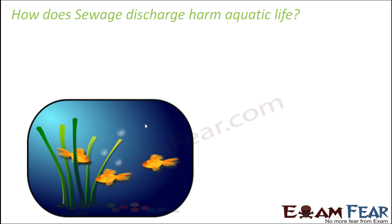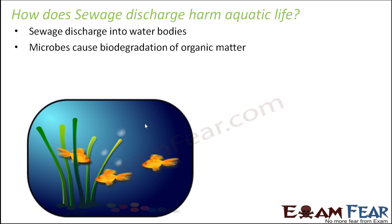If you do not treat the sewage before disposing it off into water bodies — let's say you directly take the sewage, the wastewater, and put it into the river — what can happen to the aquatic life? There are so many plants, animals, fishes, and insects living inside the water, so their life gets completely spoiled. If sewage is discharged directly into water bodies, the microbes cause biodegradation of organic matter, because the sewage contains a lot of organic impurities and the microorganisms present in the water will all start eating up that organic matter.